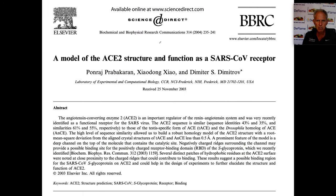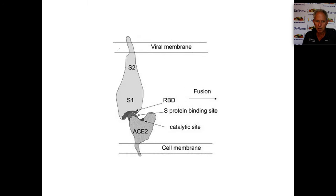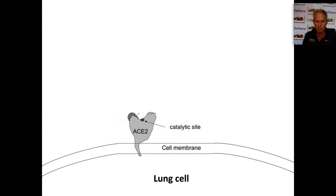This paper was published in 2004, and they identified the ACE2 structure. The ACE2 structure functions as a SARS-CoV — your coronavirus — receptor. ACE2 is actually an enzyme. I'm going to show you how it works before I show you how the entry of the coronavirus operates. Looking at the lung cell, you can see two different sections on this enzyme. This is the ACE2 enzyme — it is called angiotensin converting enzyme number two.